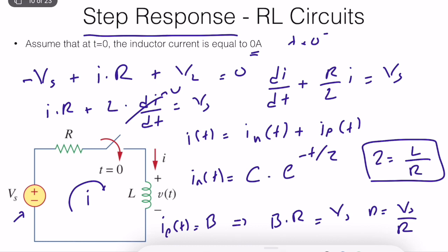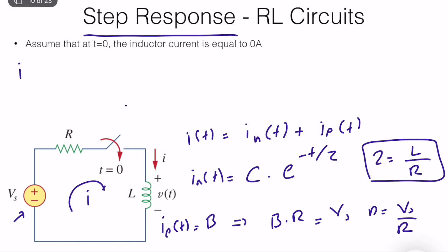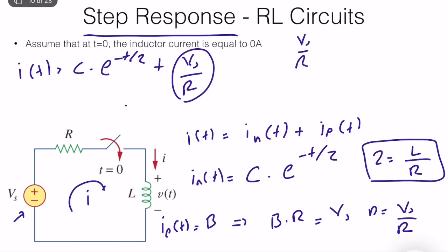Let's write the solution in a clean framework. I of T is equal to C times e to the power minus T over tau, plus B which is Vs divided by R. As time goes to infinity, the inductor acts like a short circuit and the current will be equal to the voltage source divided by R. So Vs divided by R is equal to I infinity, or the steady state current. We compute C using the initial conditions.